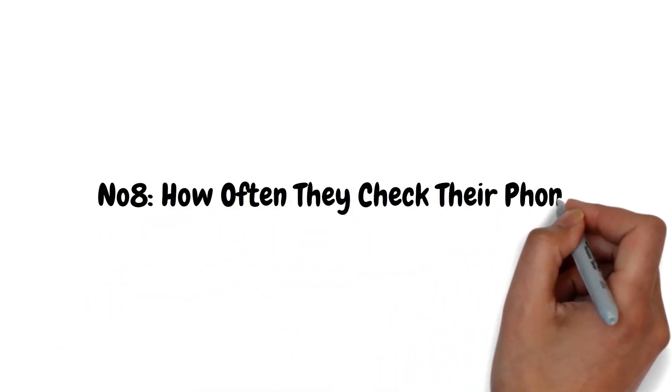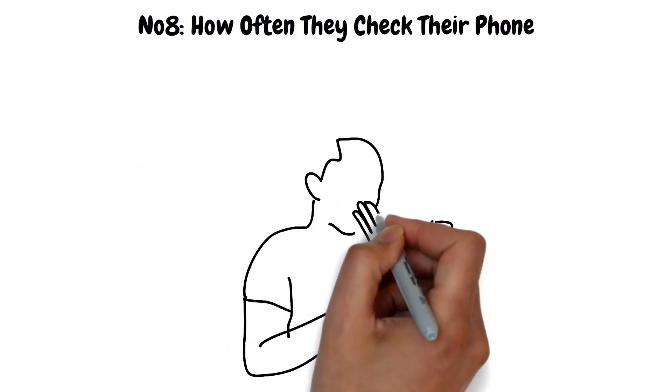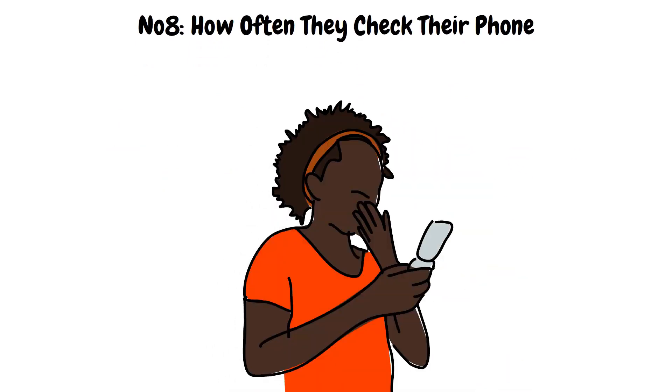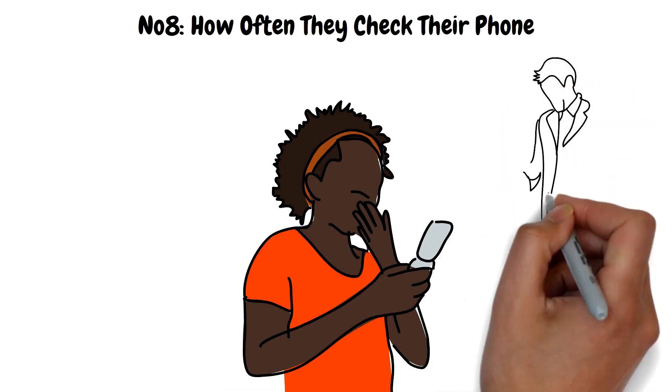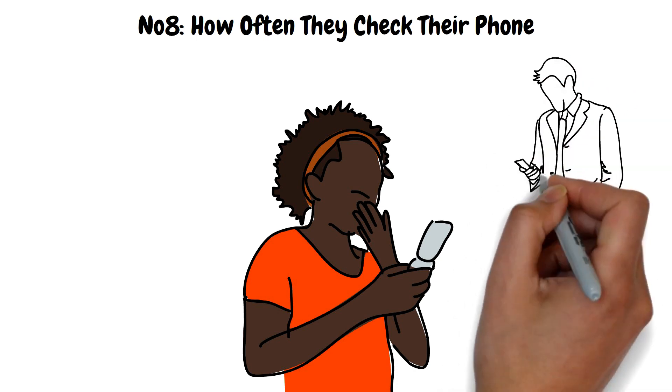How Often They Check Their Phone. We all check our phones a lot, let's be honest. But if someone does it very often, and on occasions when it is considered unnecessary or even rude, that tells a lot about them. Someone who is always checking their phone is perhaps nervous and anxious about something. People also often do this when they are bored.